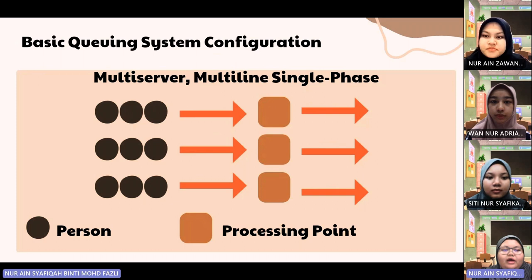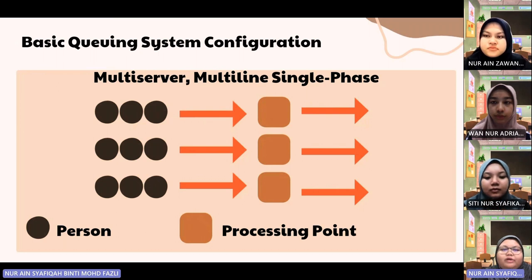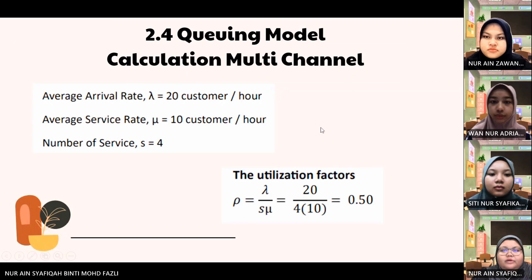When the customer arrives at Akon Jaya, the customer will proceed with their buying process. After they are done buying groceries, they will have to proceed to the processing point, which is the cashier, to make the payment. After that, they can proceed to exit from Akon Jaya. In Akon Jaya Machang, there is only one processing point, which is the cashier, to make payment and to pack all the groceries into plastic bags.